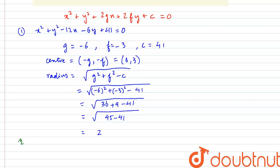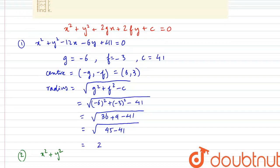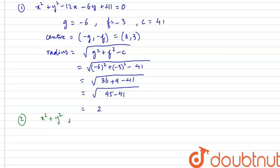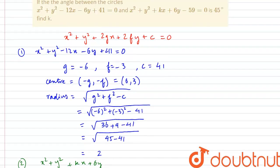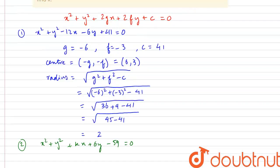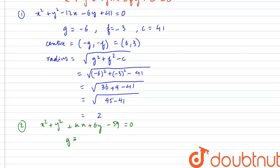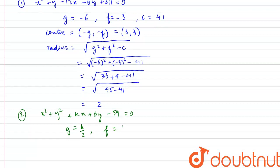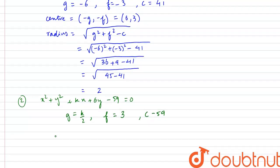Now let us consider the second equation: x² + y² + kx + 6y − 59 = 0. Comparing with the standard equation, 2g = k so g = k/2, and 2f = 6 so f = 3. The constant term c = −59. The center of this circle is (−k/2, −3).